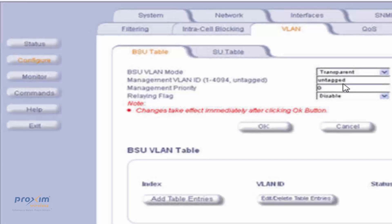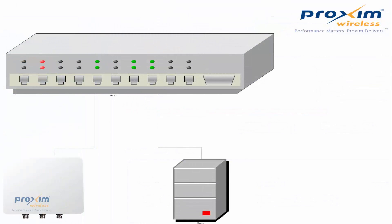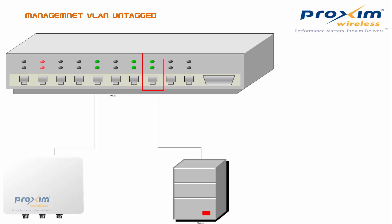Now we're going to cover the difference between tagged and untagged. What we have here is a VLAN switch, an 8000 radio, and a PC. What untagged indicates is that the Proxim radio is not expecting a VLAN ID tag. So the PC connected to the VLAN switch is going to have to be connected to a VLAN-unaware port — the native VLAN. The native VLAN is the portion of the switch that is not configured for any VLANs.